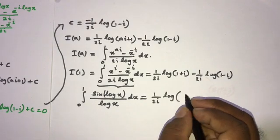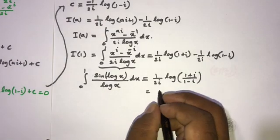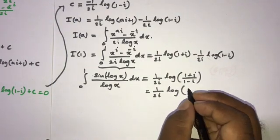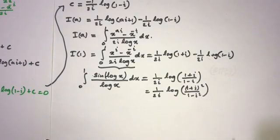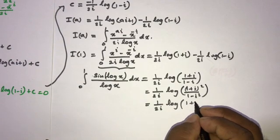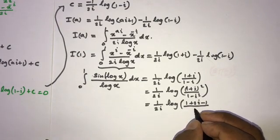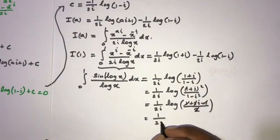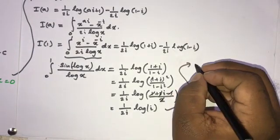We can simplify 1 over 2i times natural log of (1 plus i) over (1 minus i). Multiplying numerator and denominator by 1 plus i gives (1 plus i) squared over (1 minus i squared). Expanding: 1 plus 2i plus i squared equals 1 plus 2i minus 1 equals 2i on top, and 1 minus i squared equals 1 minus (minus 1) equals 2 on the bottom. The minus 1 cancels and the 2 cancels, leaving 1 over 2i times natural log of i.